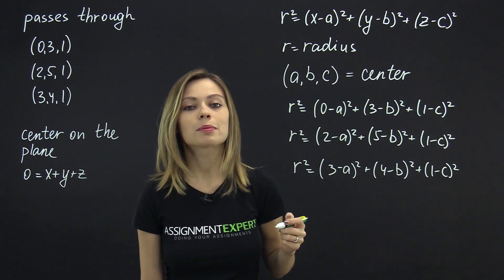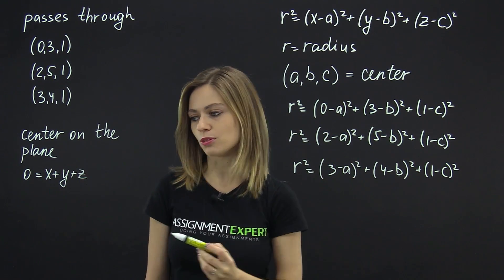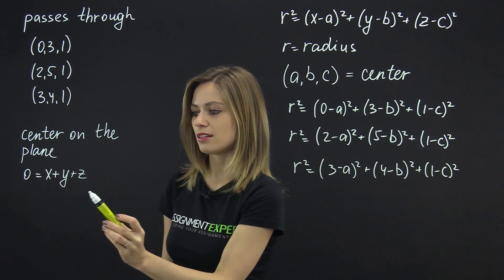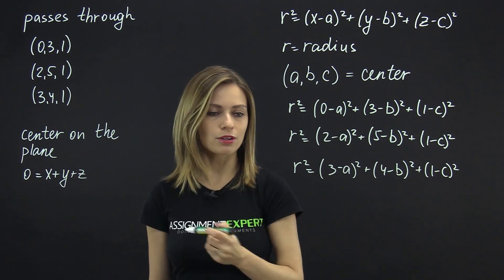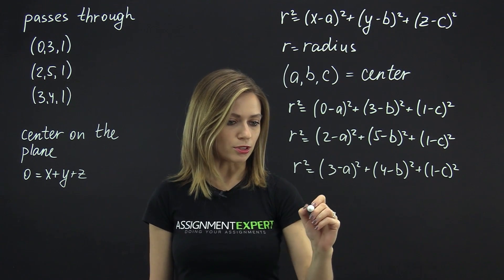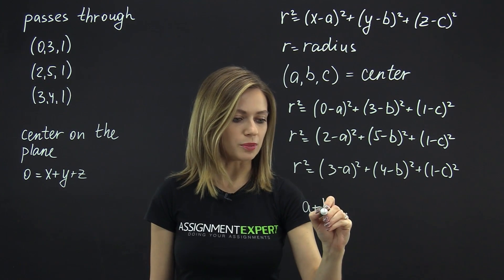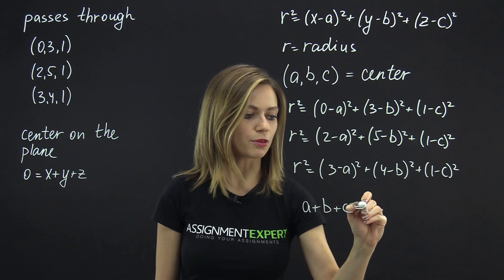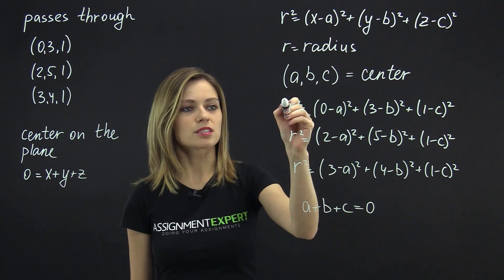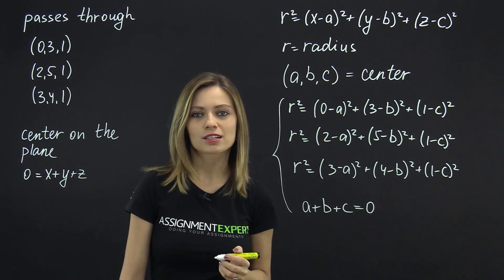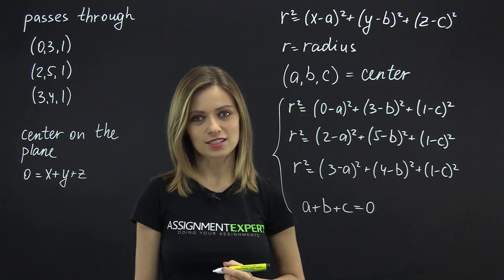We also remember that the center of the sphere lies on the plane x plus y plus z equals 0, so we'll have that a plus b plus c equals 0. So we've come up with a system of equations. Let's start with finding the coordinates of the sphere's center.